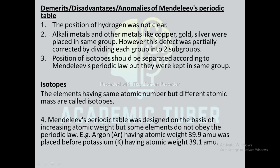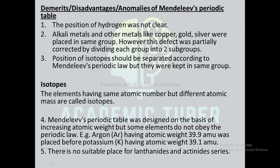Mendeleev's periodic table was designed on the basis of increasing atomic weight, but some elements do not obey the periodic law. For example, argon having atomic weight 39.9 amu was placed before potassium having atomic weight 39.1 amu. There is no suitable place for lanthanides and actinides. These are some of the disadvantages of Mendeleev's periodic table.